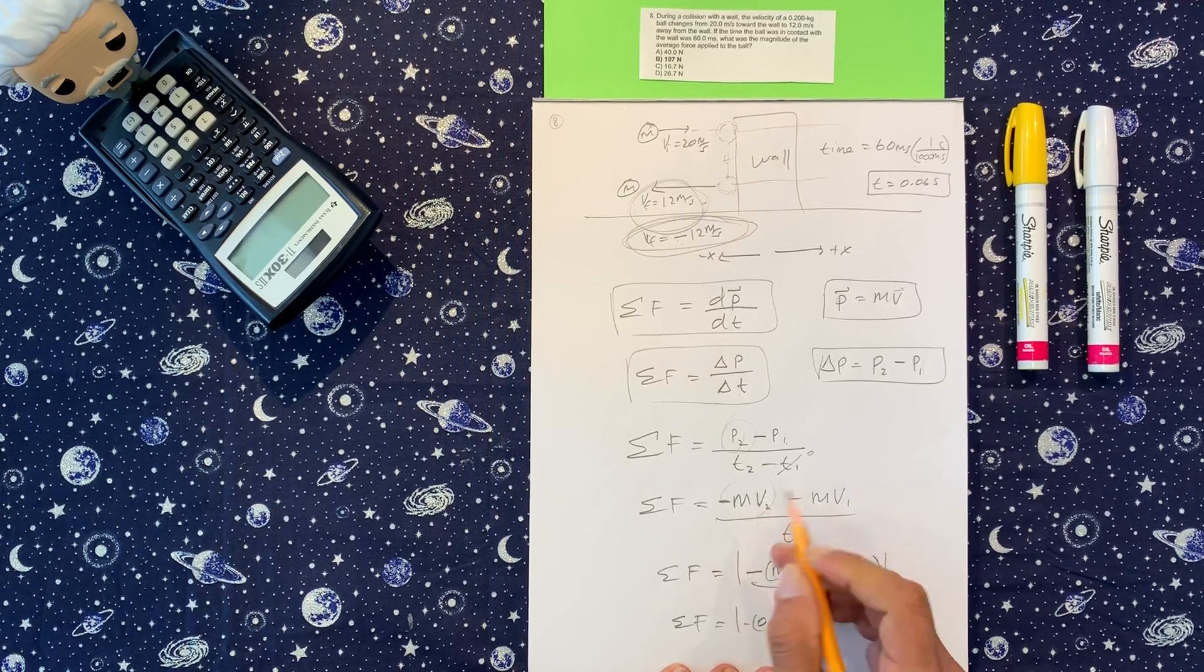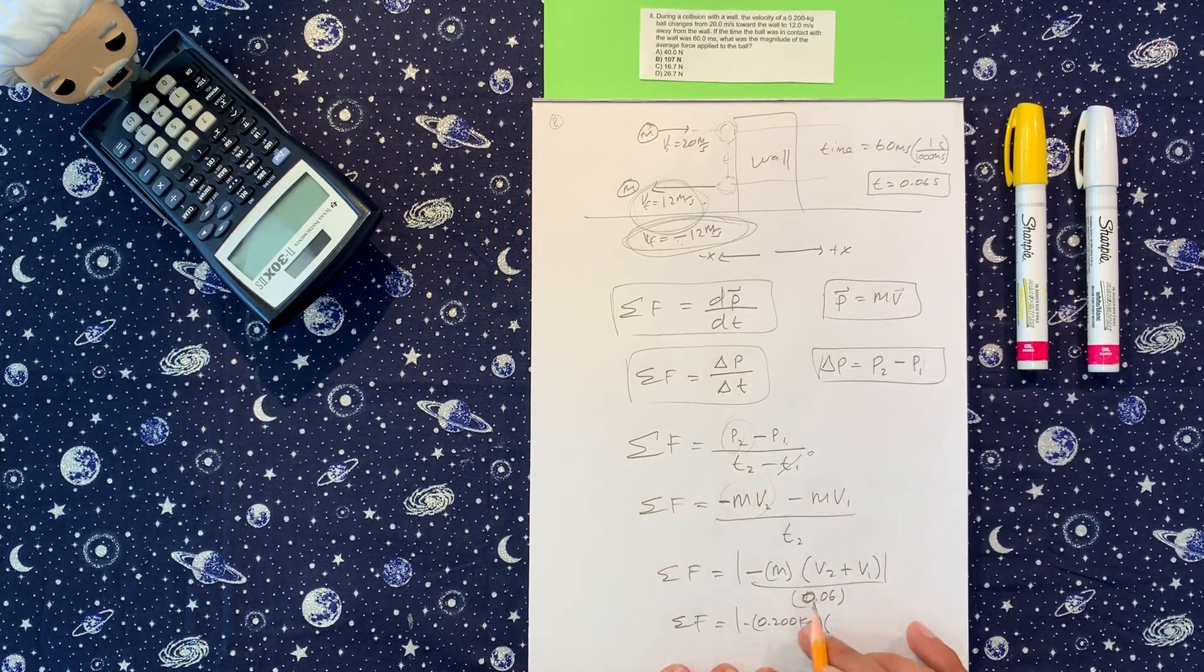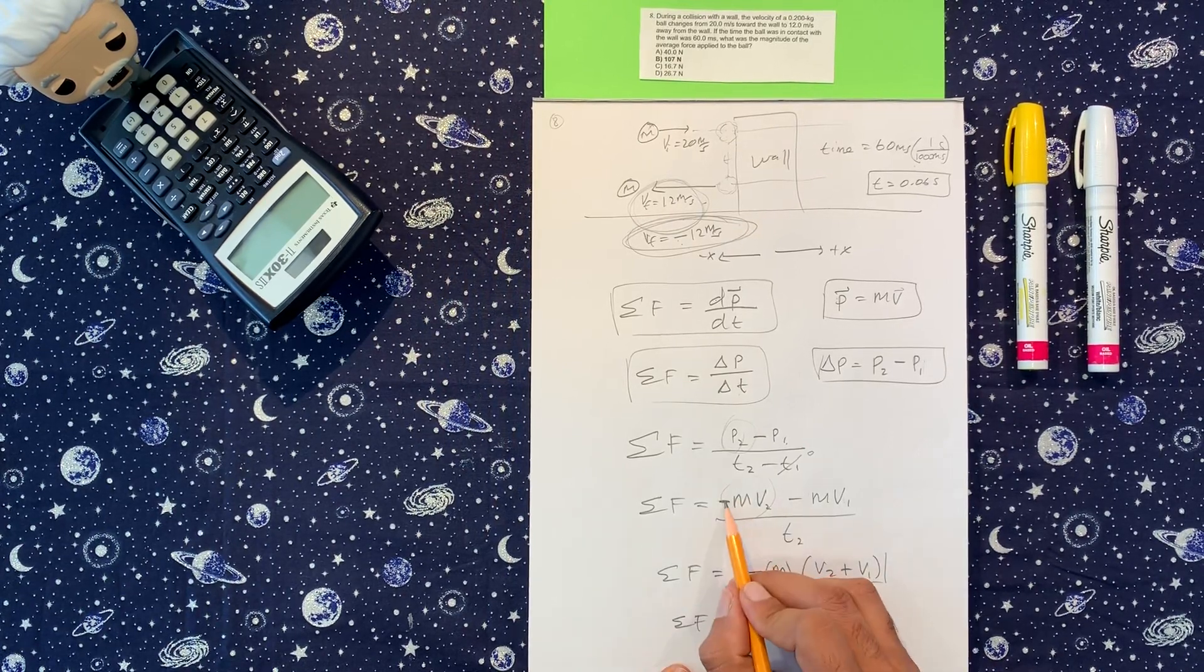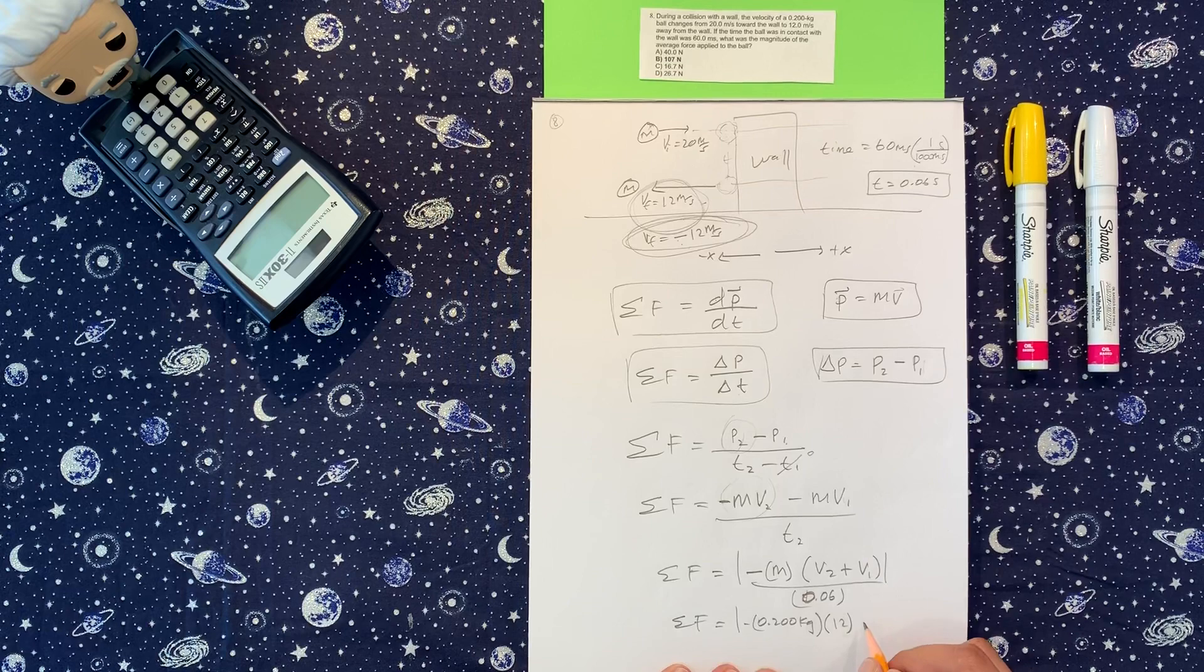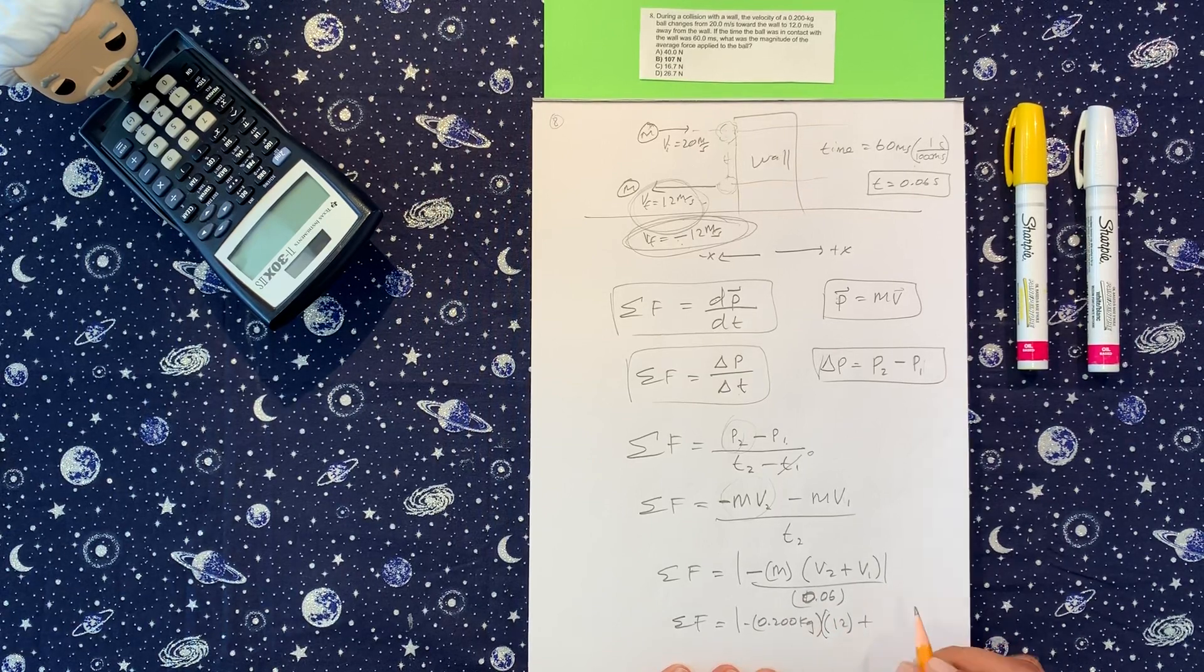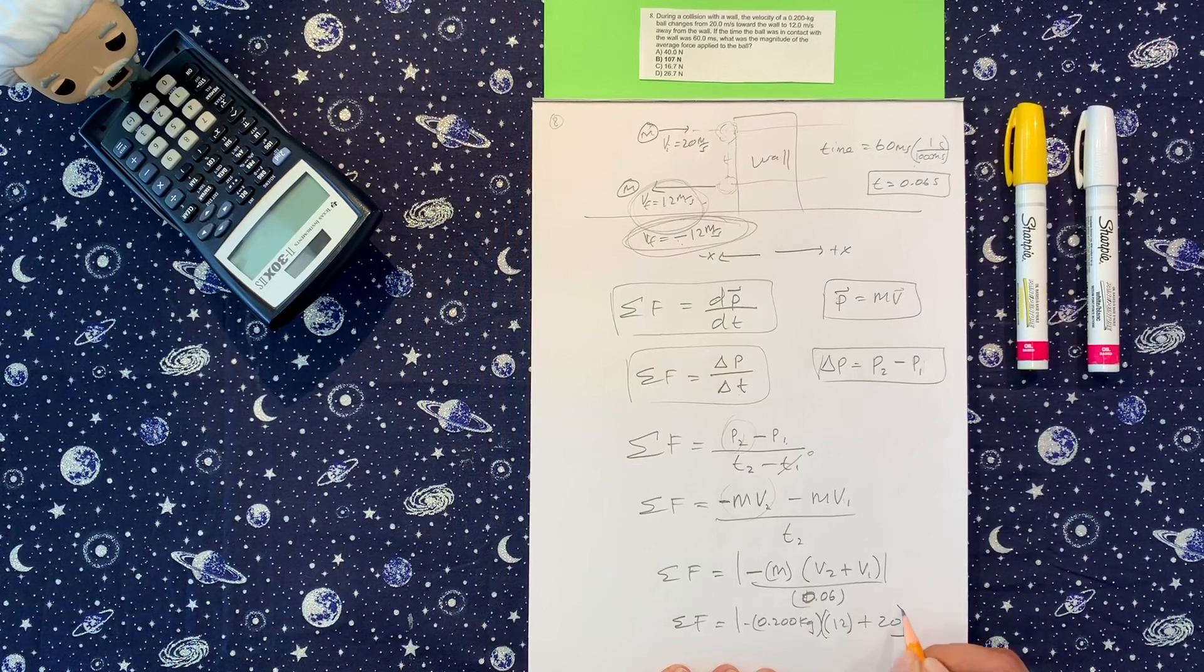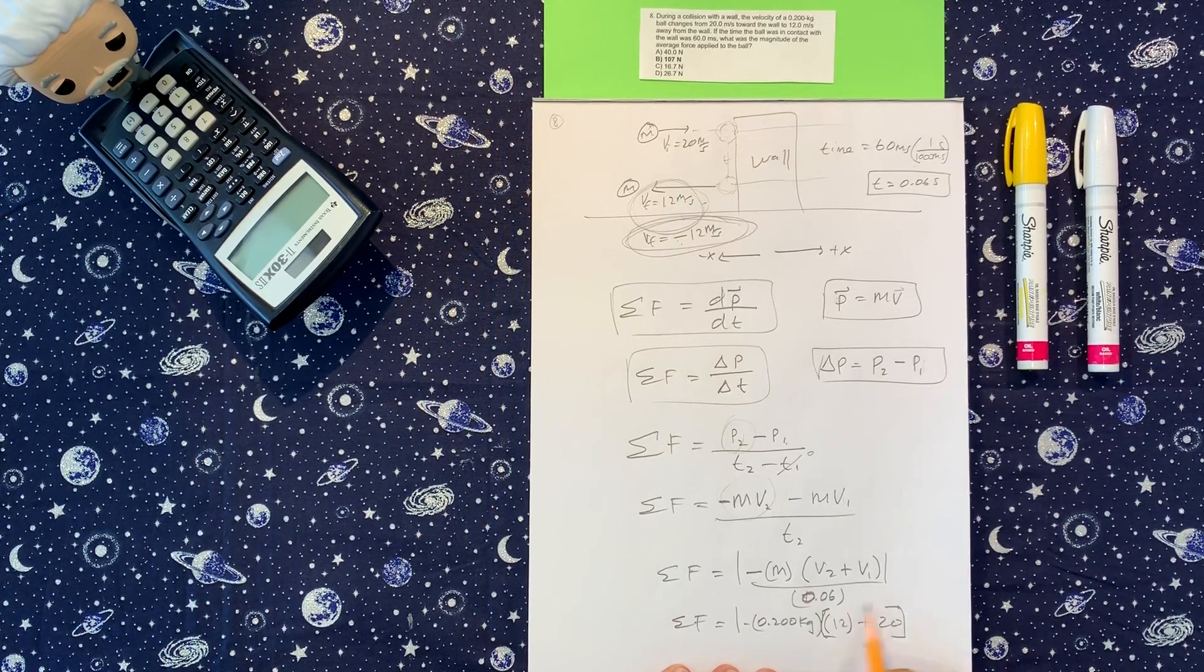v2 is 12, right? Because we already took out, so in here I included this negative which was already negative 12 in here. So now that I pulled both negatives out, this just is 12, but I did include the negative here.